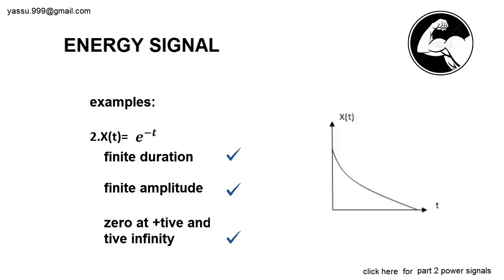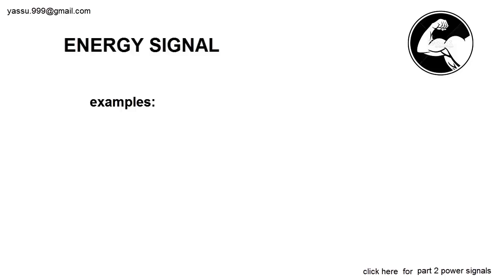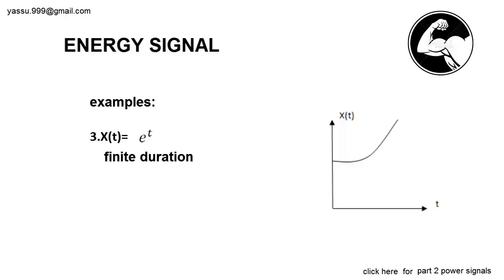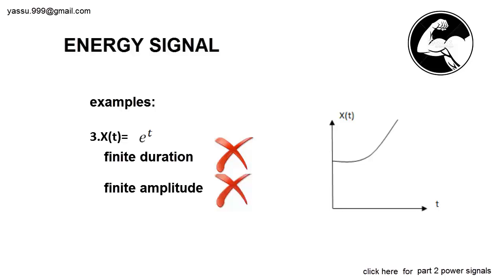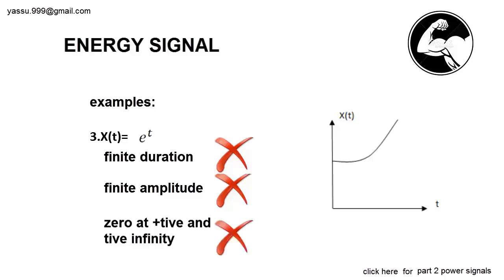Let's take another example: x(t) = e^(t). It is an exponential increasing signal, so it doesn't have a finite duration. Is it having a finite amplitude? No, you can easily tell it doesn't have a finite amplitude. At t tends to infinity, the amplitude tends to infinity, so it doesn't satisfy the third condition. So the given signal is not an energy signal.